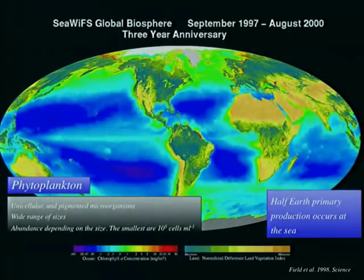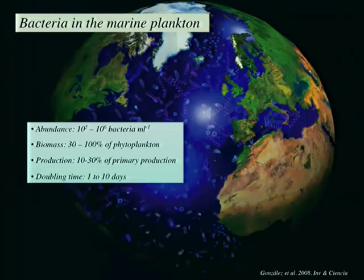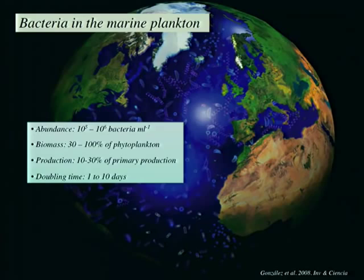Phytoplankton is very important for the ocean, but bacteria are also very important in marine plankton. Bacterial abundance reaches 10^6 cells per milliliter — one million individual organisms in 1 milliliter of seawater. Their biomass may range from 30 to 100% of phytoplankton biomass, and bacterial production represents a significant fraction of primary production. Their doubling time is approximately 1 to 10 days.